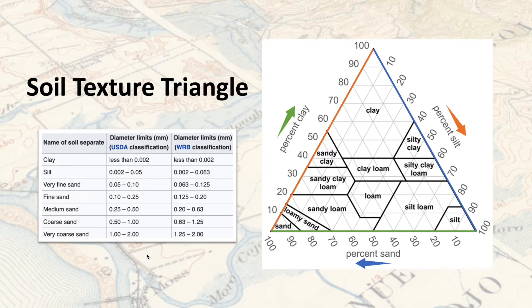Clay material is a grain size less than 0.002 millimeters. There's a list ranging from clay, silt, and very fine sand, all the way to very coarse sand. But we don't always have a way to measure this precisely — whether using a micrometer or something similar — so we have to do it in the field.